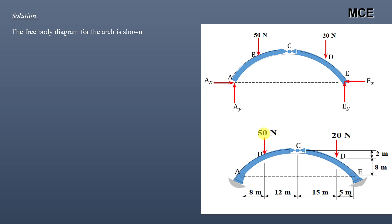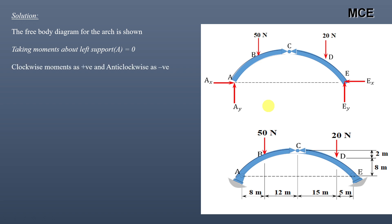You will assume the direction of the forces, that is the support reactions, as shown in the free body diagram. We are assuming that Ax acts towards the right, Ex acts towards the left, and Ay and Ey act in the upward direction respectively. After assuming the directions of these reactions, you will take the moment of the forces about the left support A. You can take moments about A or about E to find the reactions.